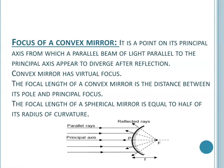Focus of a convex mirror: the principal focus or focus of a convex mirror is a point on its principal axis from which a parallel beam of light appears to diverge after reflection. A convex mirror has a virtual focus, and the focal length of a convex mirror is the distance between pole P and focus F. The focal length of a spherical mirror is equal to half of its radius of curvature: f = R/2.